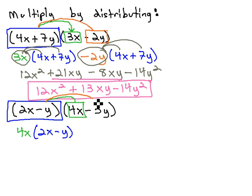Then, we distribute it also onto the negative 5y. So, we have negative 5y being multiplied by the (2x - y).